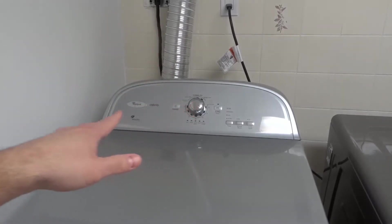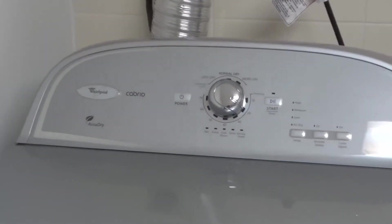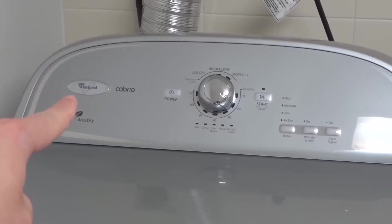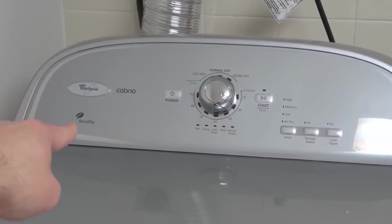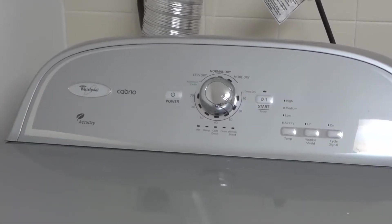As you can see right here, this is the Whirlpool Cabrio Dryer. Whirlpool, as you can see right there, Cabrio, and it is a clothes dryer. It has AccuDry technology, and I'm going to show you exactly how to use it.